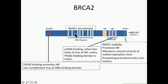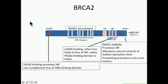BRCA2 mouse models, when null, are embryonic lethal. There are two hypomorphic models: one that deletes part of the BRC repeats region, which leads to perinatal lethality, but surviving animals succumb to thymic lymphomas early in life. The other hypomorphic allele deletes the RAD51 binding domain and animals are susceptible to tumors between one and two years of age. Yet this is a huge protein—what about the other interacting domains, particularly the PALB2 and the single-stranded domain? Is there functional redundancy between BRCA2's ability to bind single-stranded DNA versus having PALB2 present for interaction?